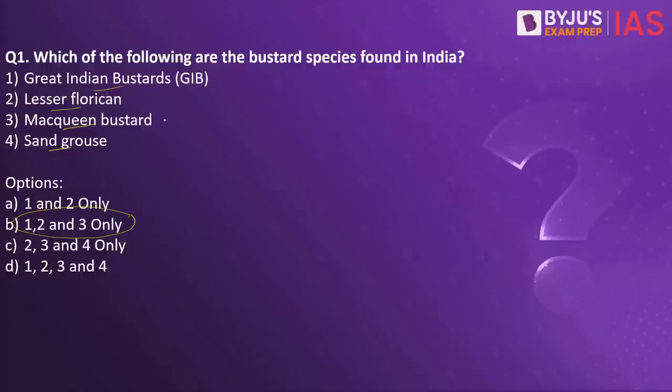The other Bustard found in India is the Bengal Floricon. So what are the four types of Bustards? We have the Great Indian Bustard, McKean's Bustard, Lesser Floricon, as well as the Bengal Floricon.